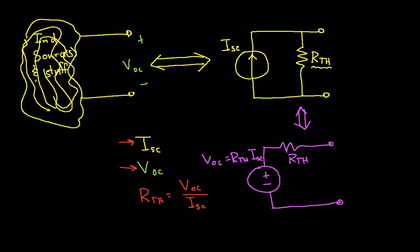This is actually true in general. If I have a circuit that looks like this, so it's a current source in parallel with resistance, I can transform it to a voltage source in series with that resistance, and vice versa. If I have the voltage source in series with the resistance, I can transform it to the current source.